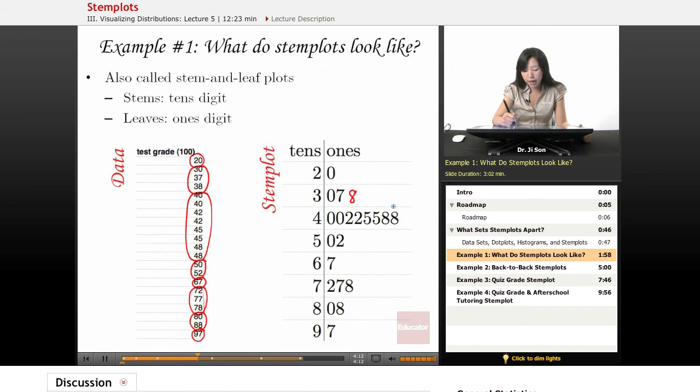Now, when you look at the stem plot, to read each of these values, you can't read this as 3078. You have to read it as a 30, a 37, and a 38. And this is a 40, a 40, a 42, 42, 45, 45, 48, 48, right?